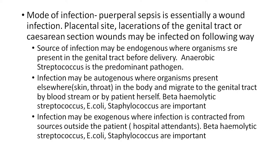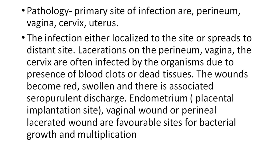Infection may be exogenous, where infection is contracted from sources outside the patient — such as hospital attendants or caregivers. Beta-hemolytic streptococcus, E. coli, and streptococcus are important among these. The primary sites of infection in pathology are the perineum, vagina, cervix, and uterus, where the infection either localizes to the site or spreads to a distant site.